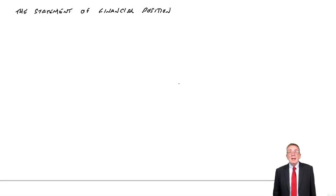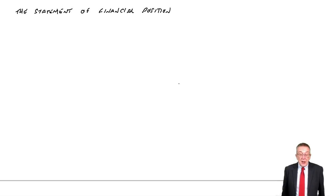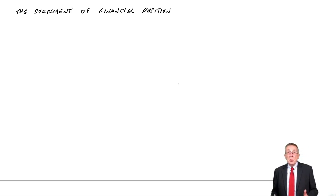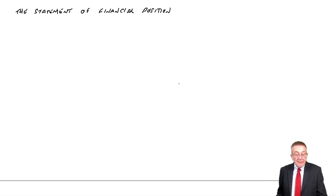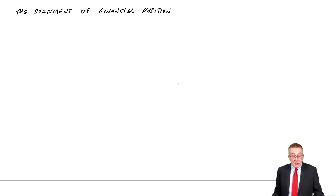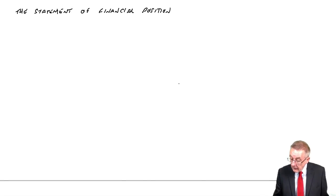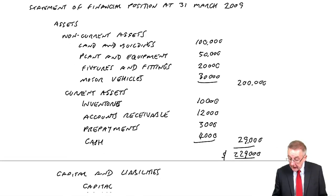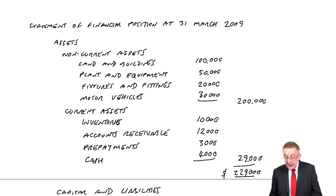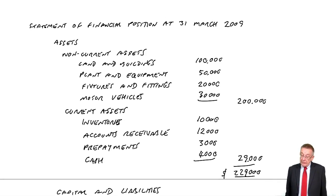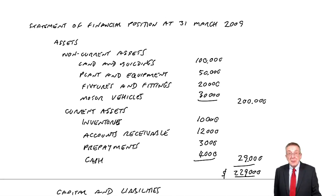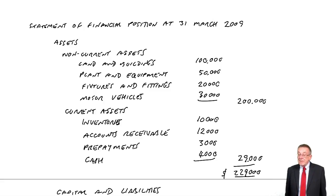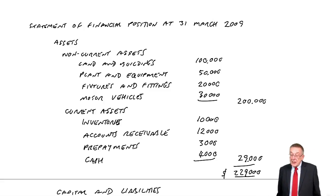For now, forget limited companies. You'll see later the layout is almost exactly the same for a limited company, but there are a couple of extra things. This is for a sole trader. If you look at the next page of the chapter, you've got an example of the layout, which I've written out here. But let me use it just to explain how we lay it out nicely.